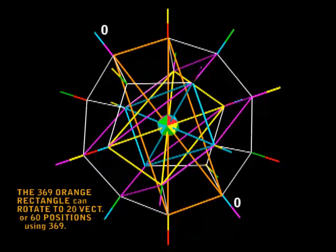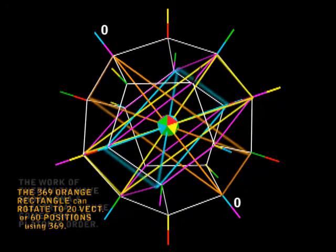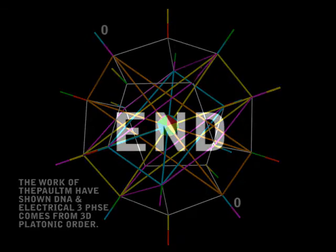As I showed in my earlier videos, it will give us DNA. I also showed that three-phase electricity comes out of cubic arrangements, which is part of this dodeca. So I think I'll call it a day now. This is Paul saying thank you very much for looking at my video.